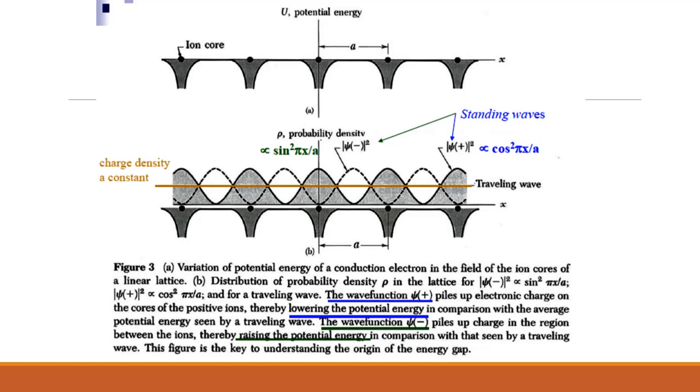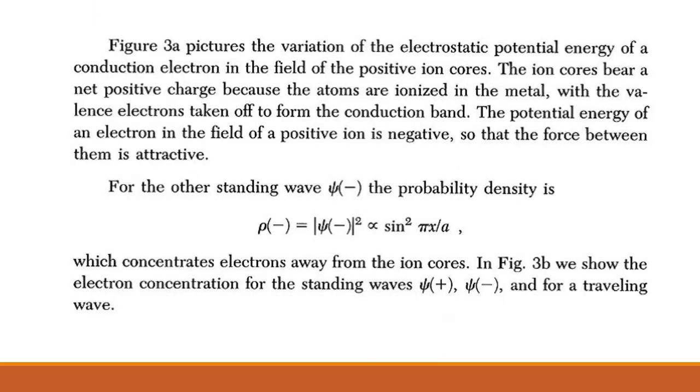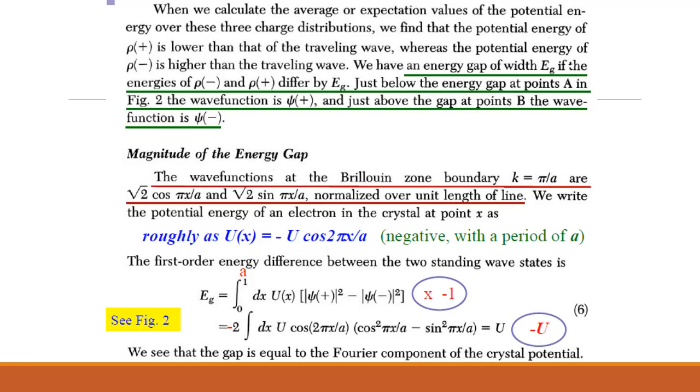Just below the energy gap at point A in figure 2, see slide 5, the wave function is psi plus, and just above the gap at point B, the wave function is psi minus. To find the magnitude of energy gap, we write the potential energy of an electron in the crystal at point x as roughly u of x equals minus u cos 2 pi x by a.